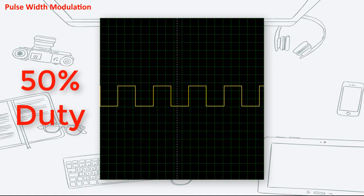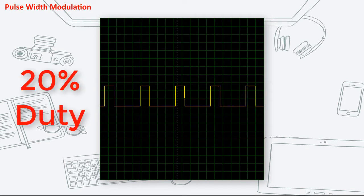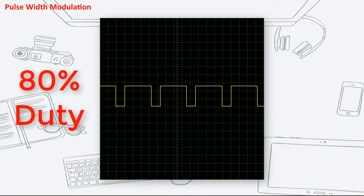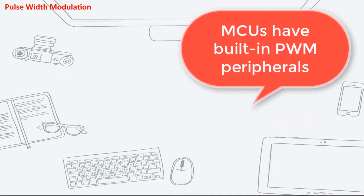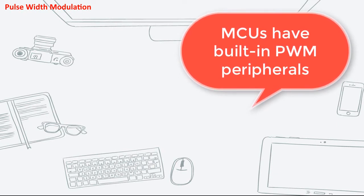If we decrease the PWM to 20% duty, it now looks like this, and the electronic component is now only supplied for 20% of the time. Increasing it to 80%, the signal now looks like this, with the electronic component supplied 80% of the time.